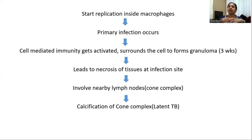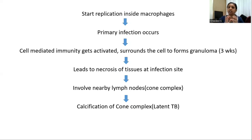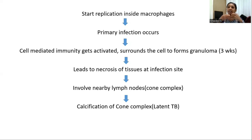The cell-mediated immunity gets activated and surrounds the cells to form a granuloma in our lungs. This leads to the necrosis process of tissues at the infection site, where the tissues are damaged.